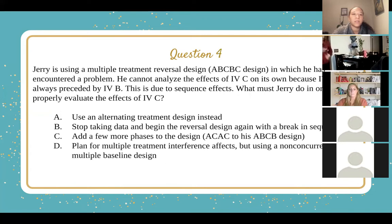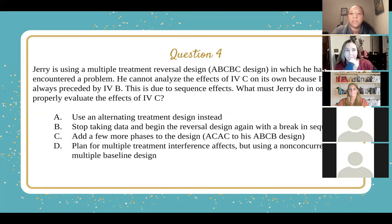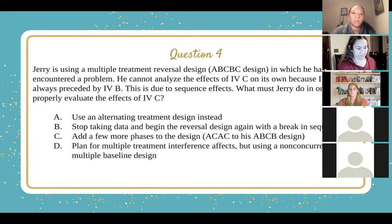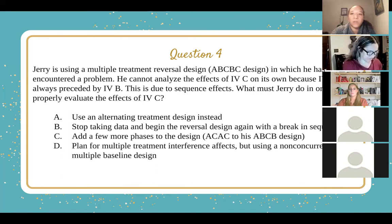Let's look at question four. Jerry is using a multiple treatment reversal design — an A, B, C, B, C design — in which he has encountered a problem. He cannot analyze the effects of intervention C on its own, because intervention C is always preceded by B. This is due to sequence effects. What must Jerry do in order to properly evaluate the effects of intervention C?